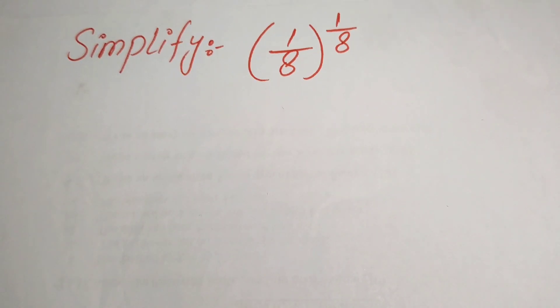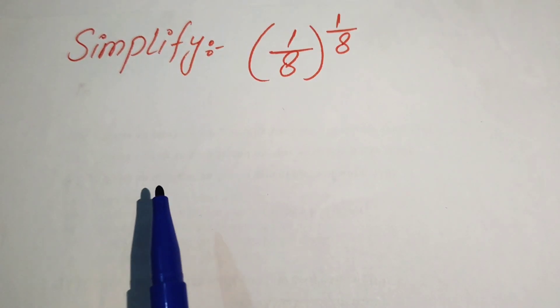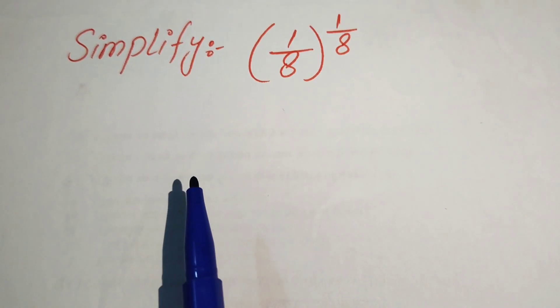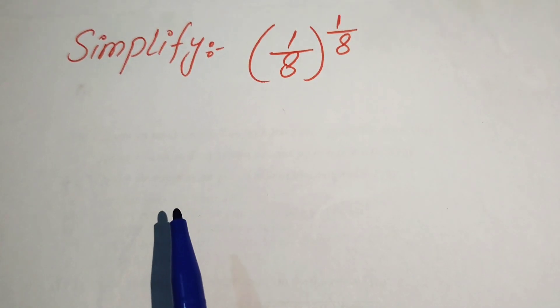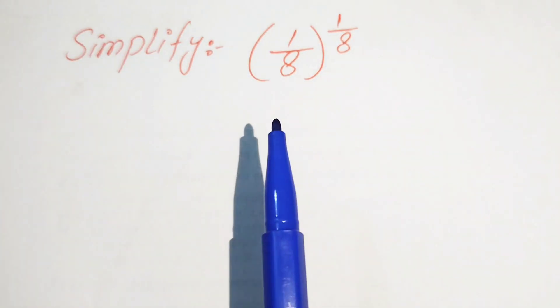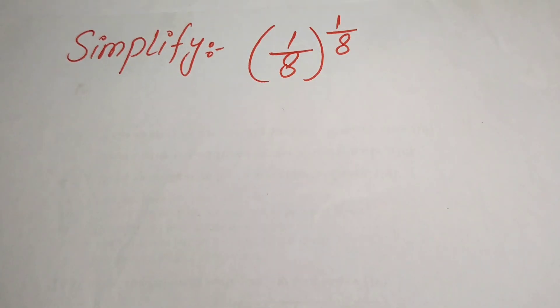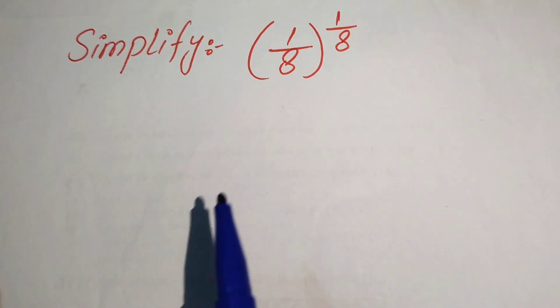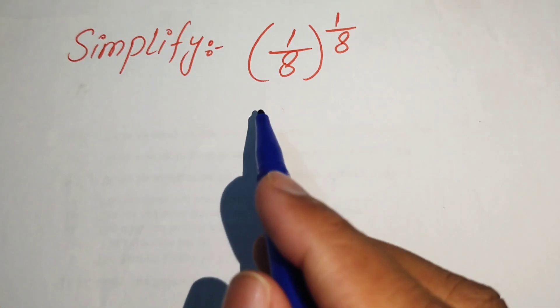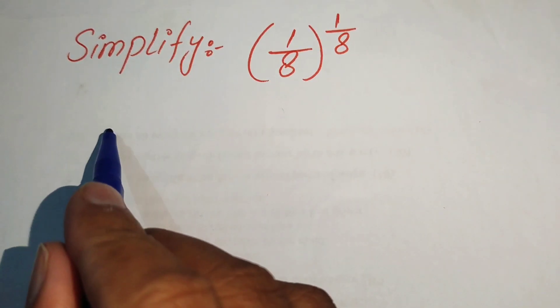Hello everyone, welcome to simplify this algebraic expression. We have 1 over 8 and its whole power 1 over 8, and we will write this into the simplified form.